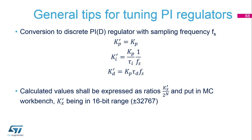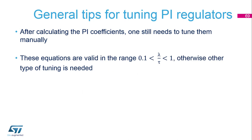These values shall be expressed as a ratio of Kp and entered in the motor control workbench, where the value of the Kx parameter is in the 16-bit range. Finally, when calculating the PI coefficients, we still need to tune the system to the final point. The equations on the previous slides are valid in the range of lambda divided by T from 0.1 to 1; otherwise we need to use other types of tuning.